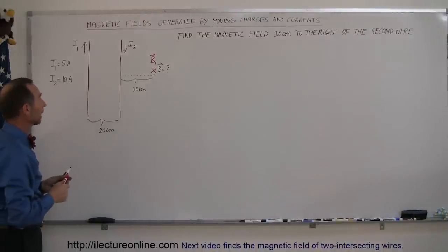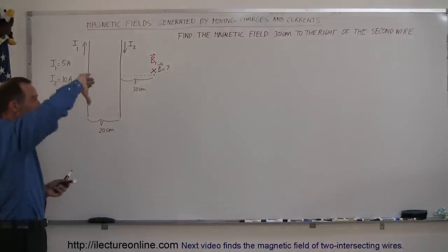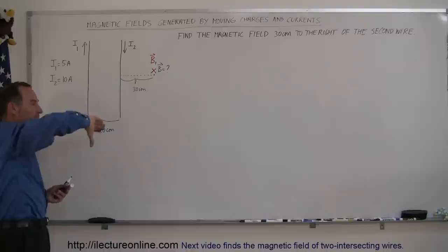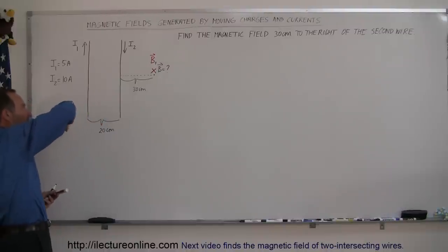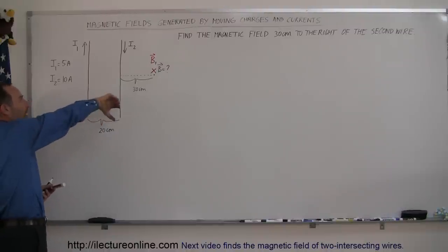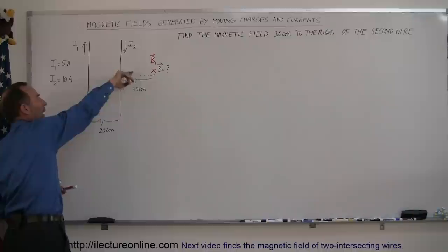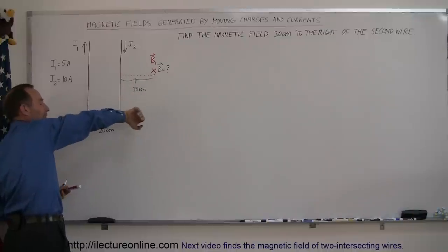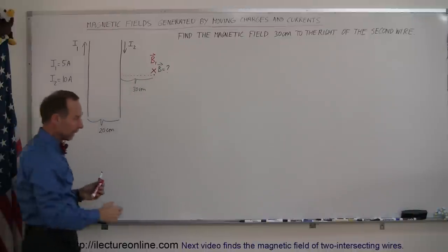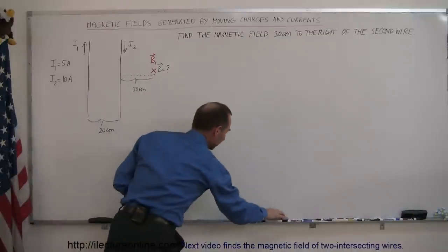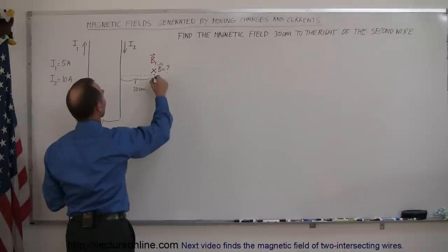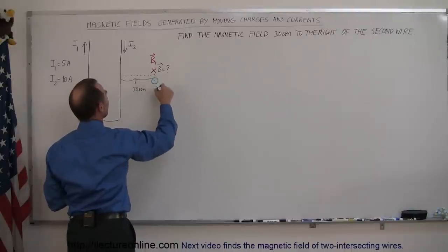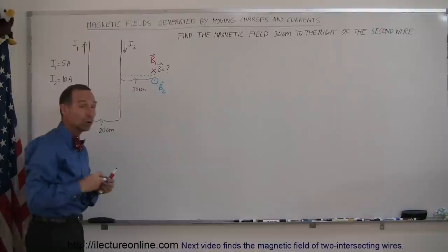Looking at the second wire, the current goes down. I use my thumb in the direction of the current, and my fingers curl around in the direction of the magnetic field. So to the right of this wire, the magnetic field will come out of the board. That's the magnetic field coming out of the board due to the second wire, so we'll call that B2.